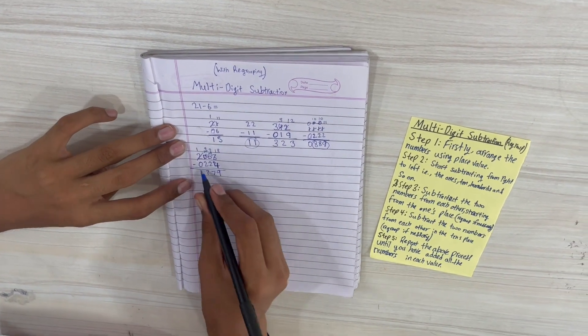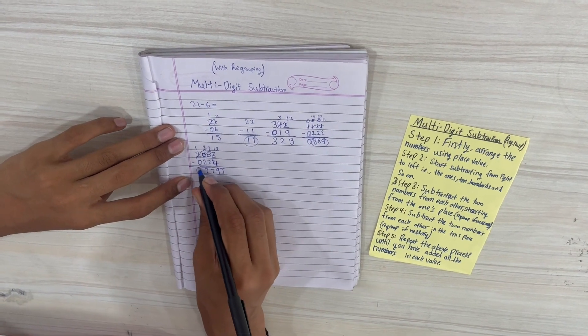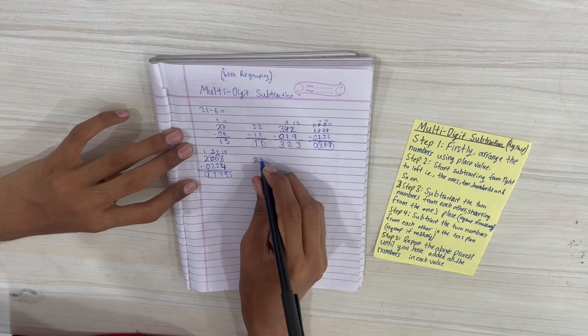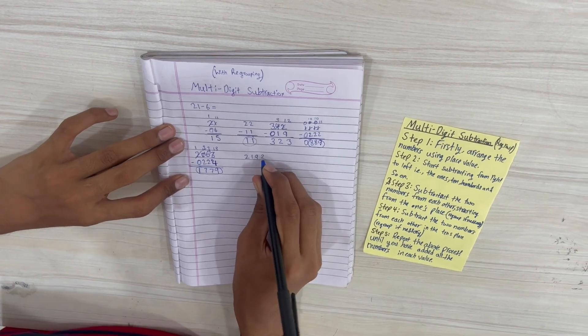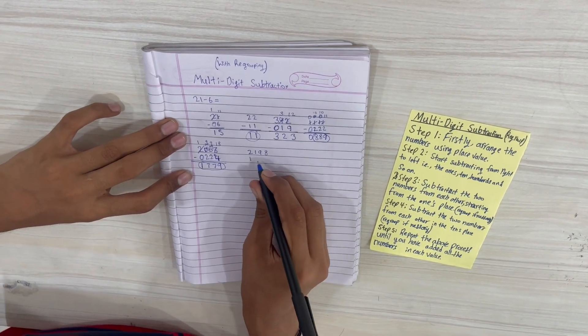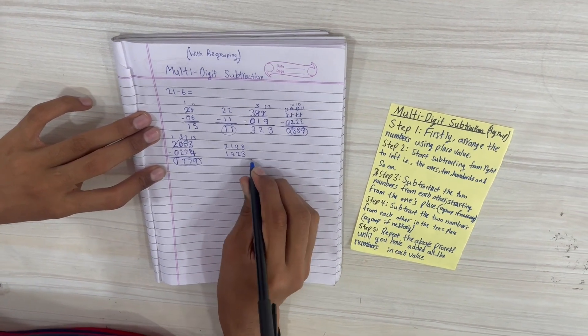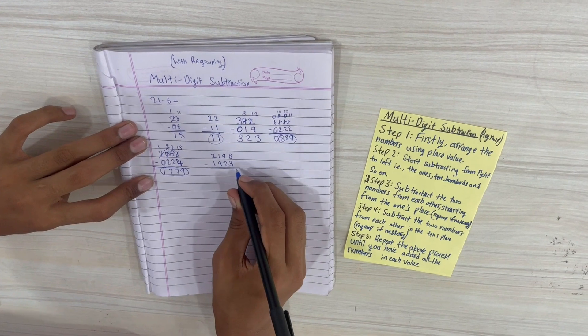So now for the final question we'll be doing 2198 minus 1923. We arrange them in the proper place value.